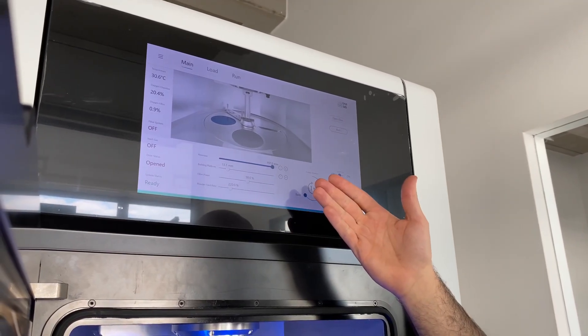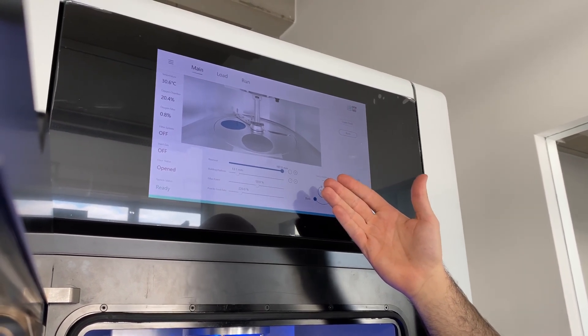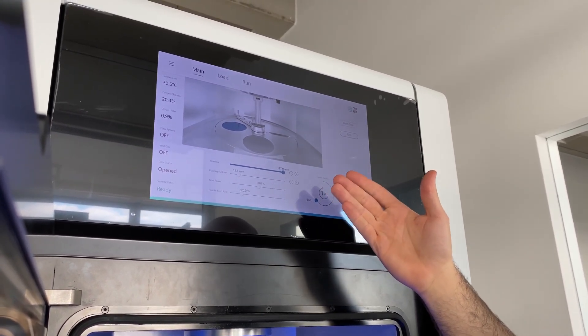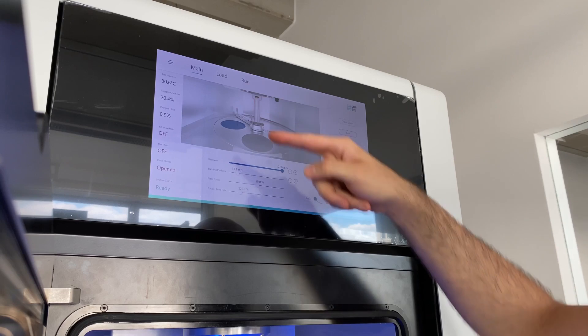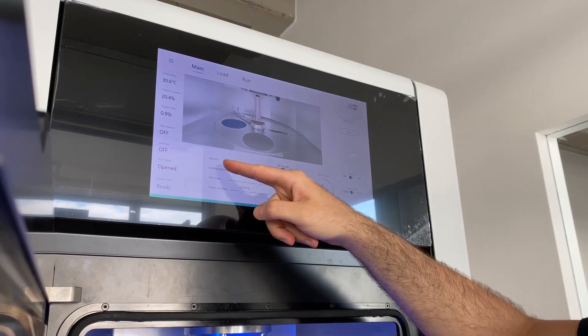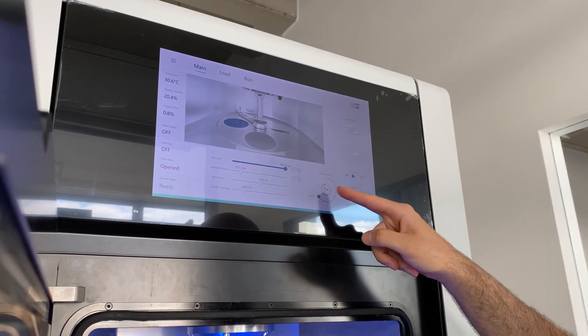Here you can see our main user interface, where you control your 3D printing process. In the main tab, you can control our axes: the reservoir, the building platform, and the coater.